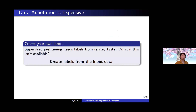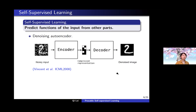One important success story of representation learning is through self-supervised learning (SSL). The intuition is that data annotation is very expensive, so it is important to create our own labels from the input data without human annotations. In a nutshell, SSL predicts functions of the input from other parts of the input, and there are various ways to design such self-supervised learning tasks, usually referred to as pretext tasks.